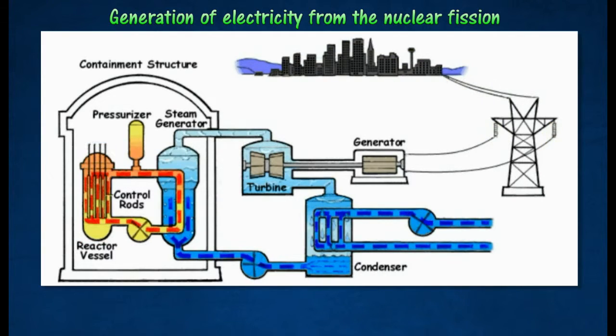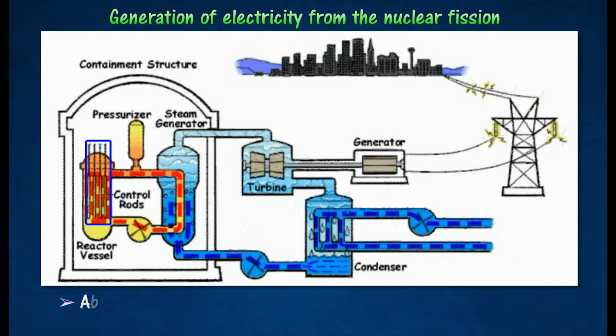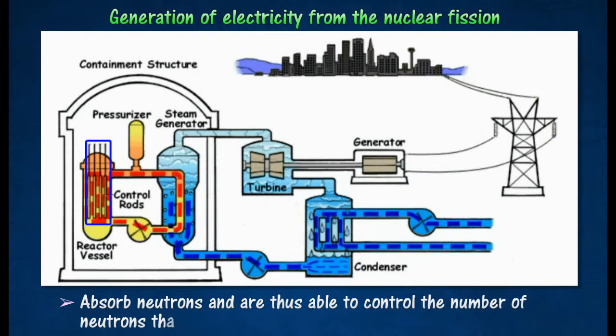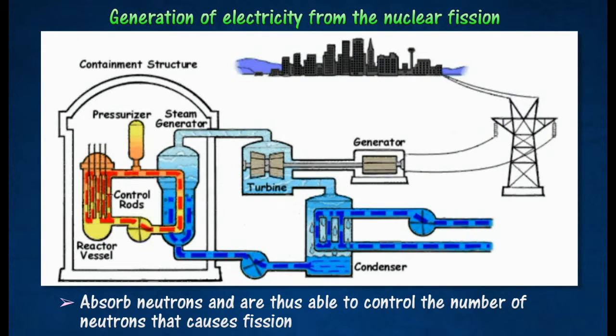Control rods in the reactor are made of cadmium or boron. Control rods absorb neutrons and are thus able to control the number of neutrons that causes fission.